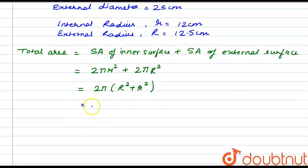By putting the values, we have 2 into 3.14 into 12.5² plus 12². This gives us the value as 2 into 3.14, where 12.5² is 156.25 plus 12² is 144.